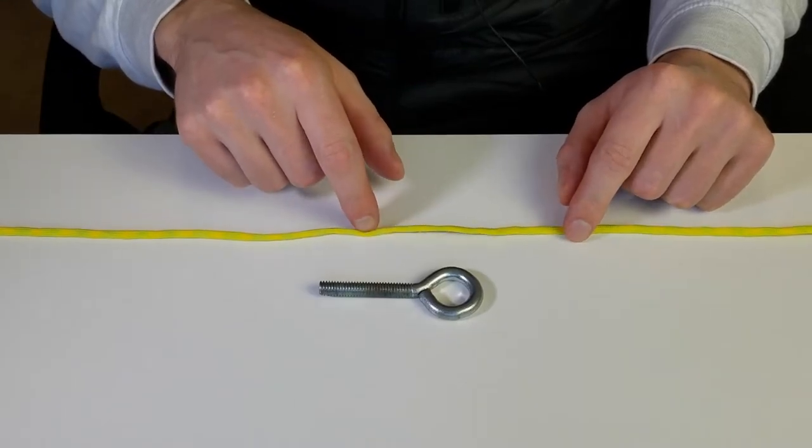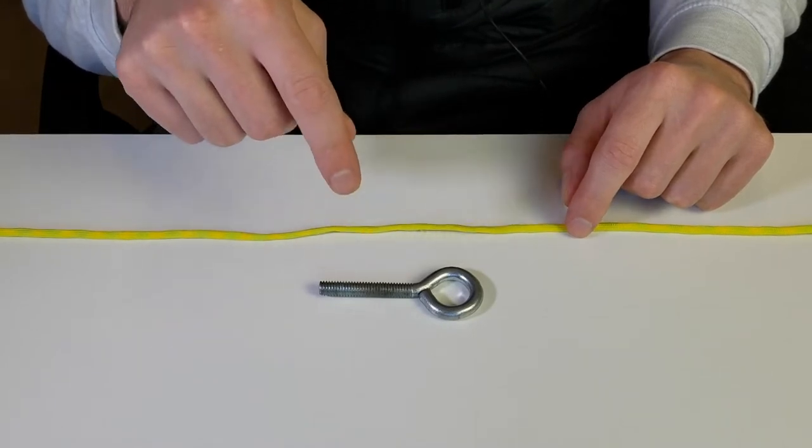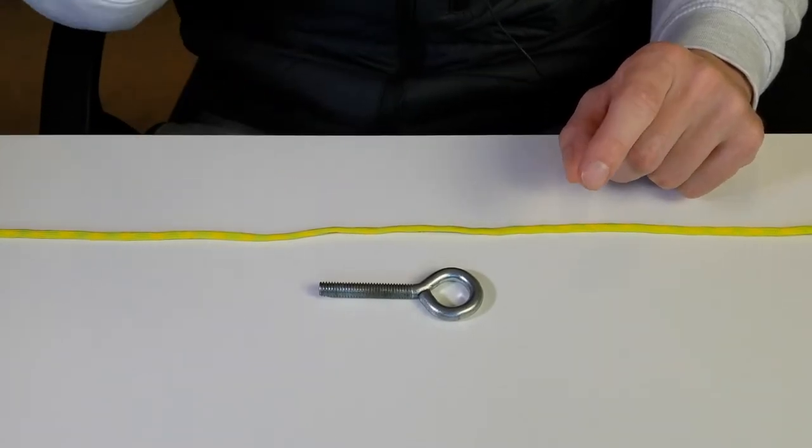You're going to need your fishing line here and then whatever you want to attach. It could be your lure, could be a fly, pretty much whatever.